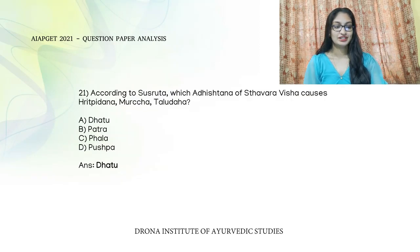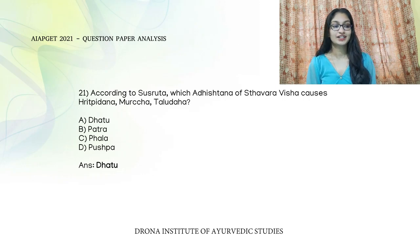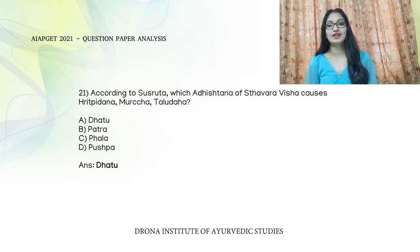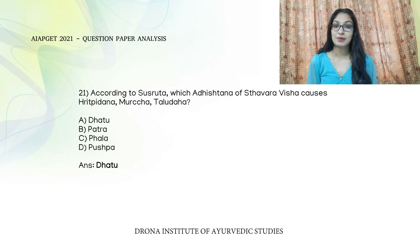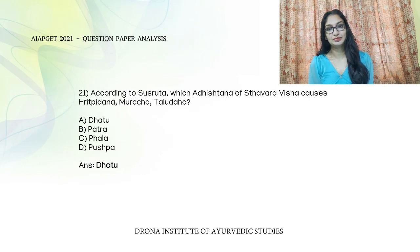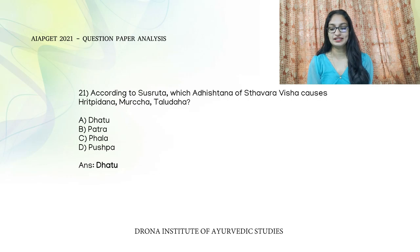According to Sushruta, which Adhishtana of Stavare Vishah causes Hrithpidana, Moorcha, and Taludaha? From Sushruta Samhita Kalpastanam, in Dathu Vishah the symptoms include Hrithpida, Moorcha, and Taludaha. In Patra Vishah: Jrimba, Shwasam, Anga Udveshtanam. In Bhala Vishah: Mushka Shobham, Daham, Annadvesham. In Pushpa Vishah: Admana Mohachardi.